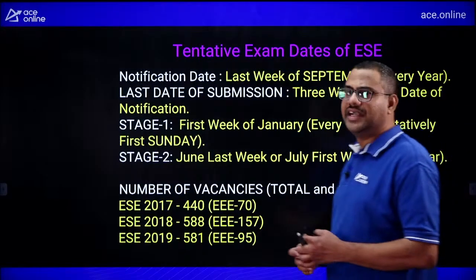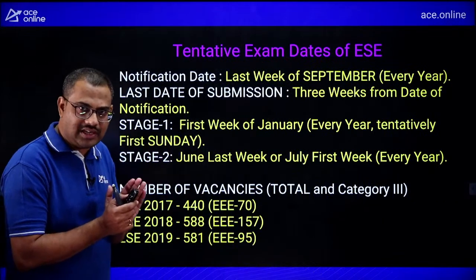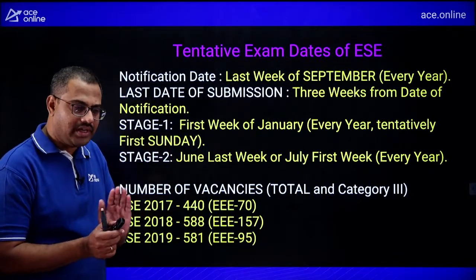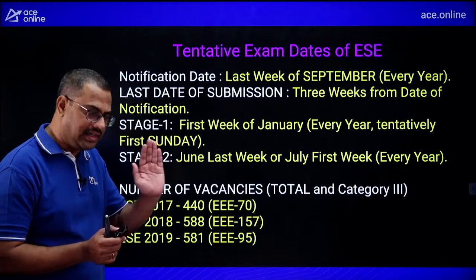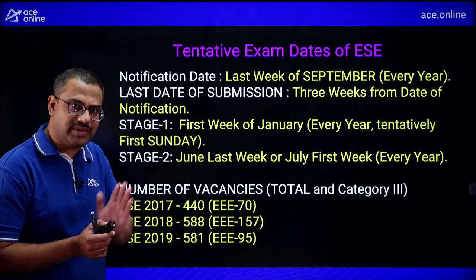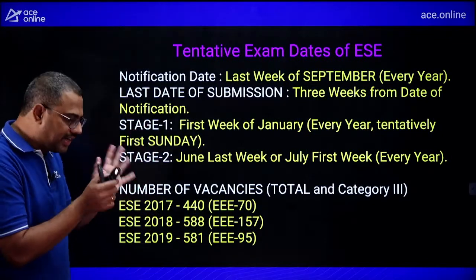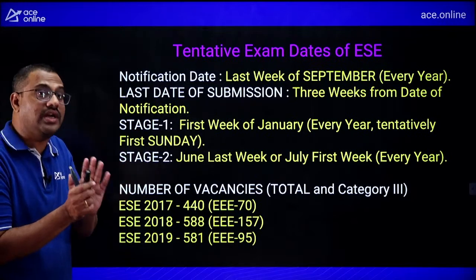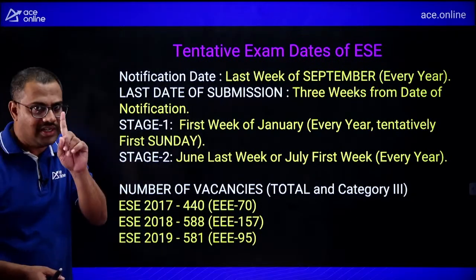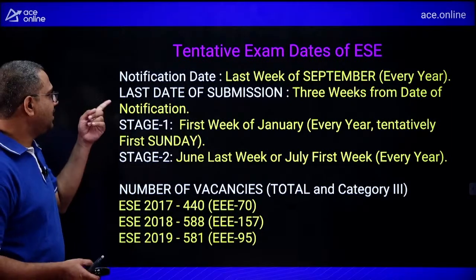GATE notification comes at the end of August and closes by end of September. ESE notification generally comes in the second week of September and closes by the first week of October. Both come annually, so you cannot delay. Know the tentative dates in advance and be ready to apply because missing the window means waiting another year.